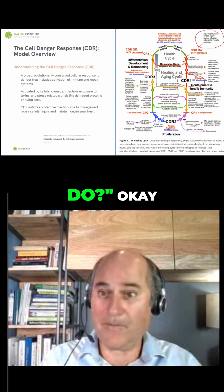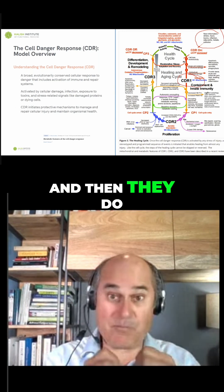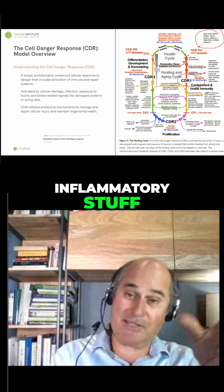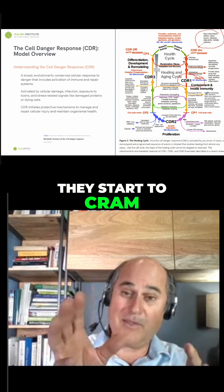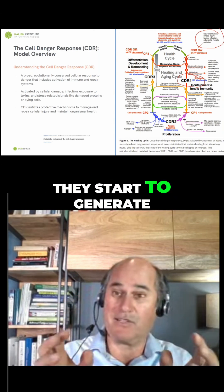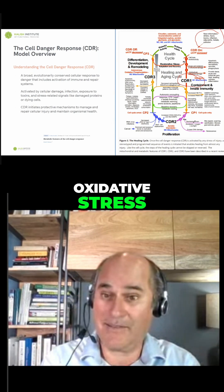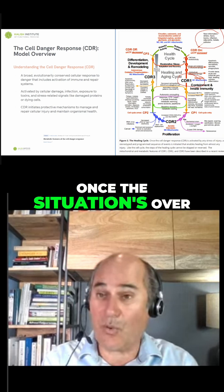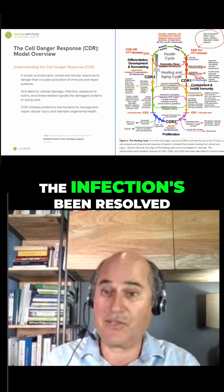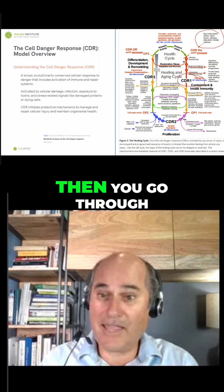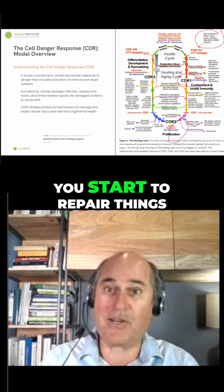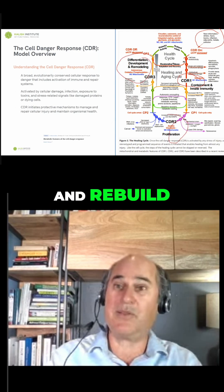What are we going to do? They start to create inflammatory stuff — cytokines. They start to cram fatty acids that are damaged into the membrane. They start to generate oxidative stress. Once the situation's over — the virus is gone, the injury is over, the infection's been resolved — then you go through this restorative phase where you start to repair things and remodel and rebuild.